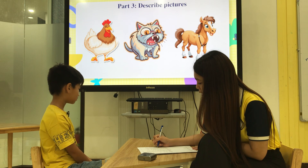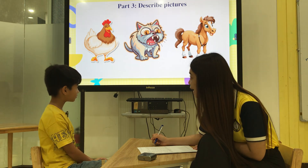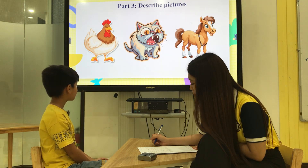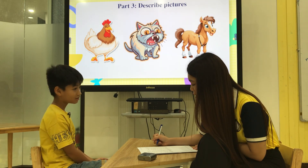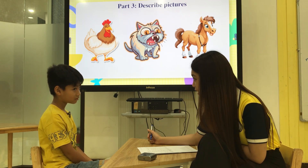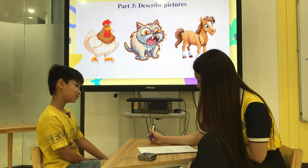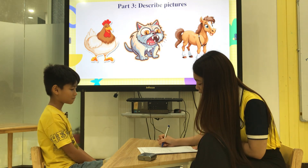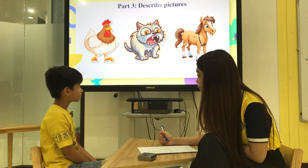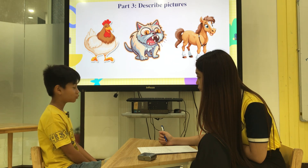Is it a happy or sad chicken? Happy. Okay, look at the horse — has it got short legs? No. Has it got a black face? No.